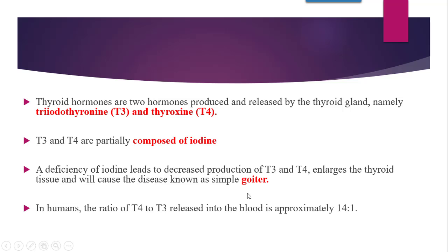The deficiency of thyroid hormones leads to a disease called goiter. There are two major conditions related to thyroid hormone functioning: when there is excess secretion of thyroid hormones the condition is hyperthyroidism, and when there is low secretion or deficiency of thyroid hormones the condition is hypothyroidism. These are caused by various factors which will be discussed in detail in the next video.